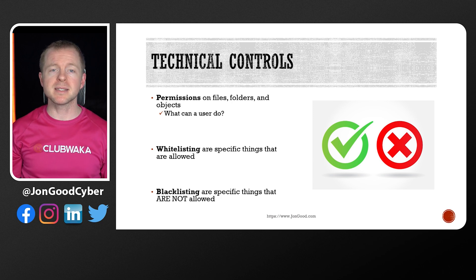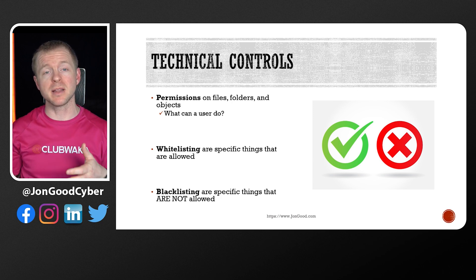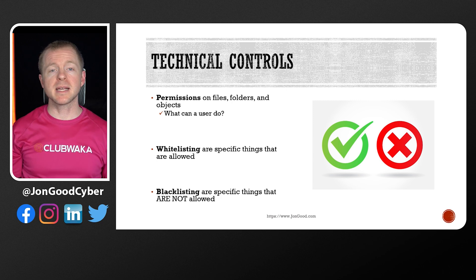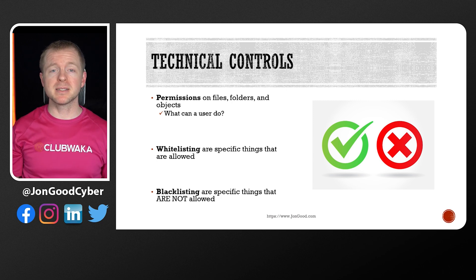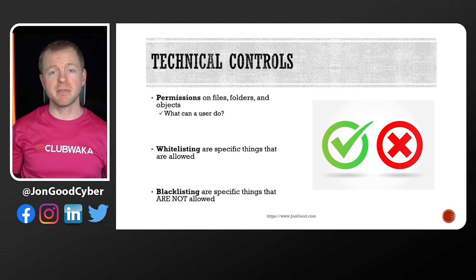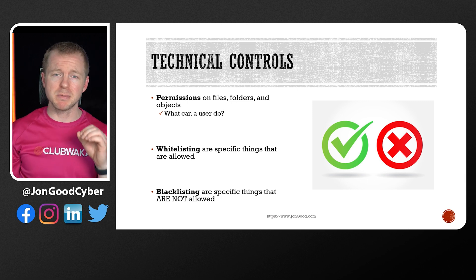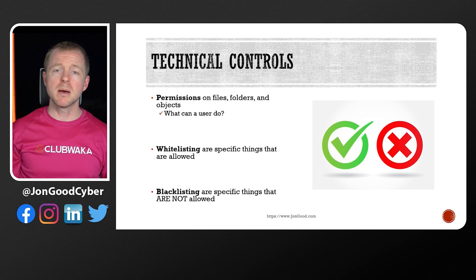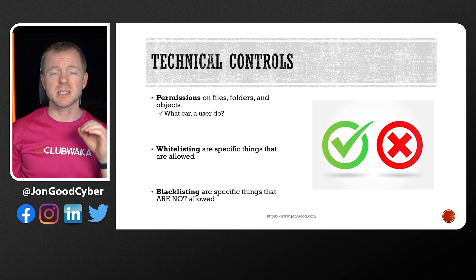Whitelisting and blacklisting are useful to identify what's allowed and what's not allowed. Whitelisting is where we're only allowing certain things, and blacklisting is where we're rejecting specific things. It can be very hard to identify the specific things that we're trying to allow, but it can also be very hard to pick out the specific things that we're trying to reject.